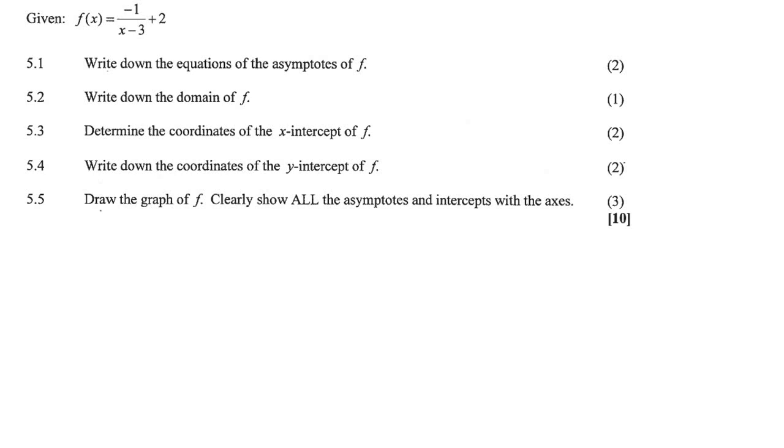In this question we have a hyperbola and the first question says write down the equations of the asymptotes. Remember that your asymptotes are this one over here and this one over here for a hyperbola. If we draw a random little hyperbola, this moves the graph three places to the right. So that would be at x equals to three and then this moves it two places up.